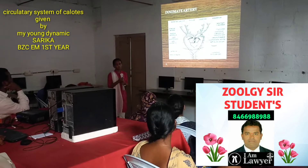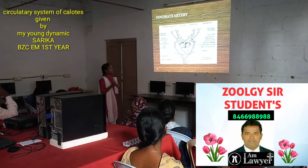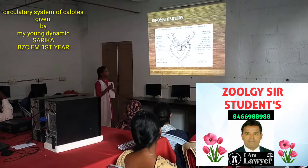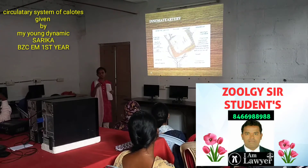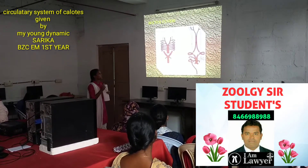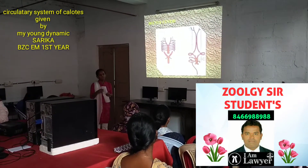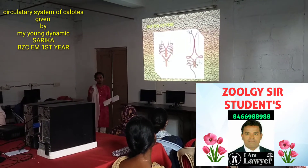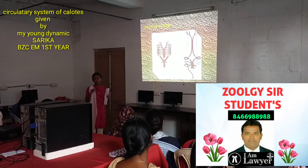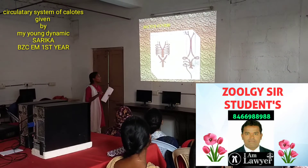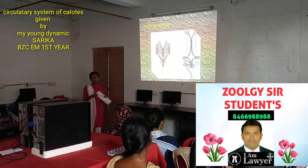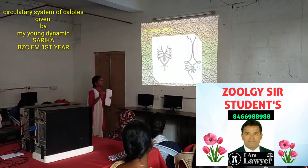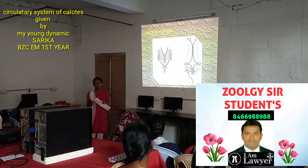The carotid artery supplies oxygenated blood to the brain, shoulders, etc. It comes down to the posterior side and fuses at a junction known as the ductus cuvieri, which is the dorsal aorta. The dorsal aorta sends oxygenated blood to the bone.